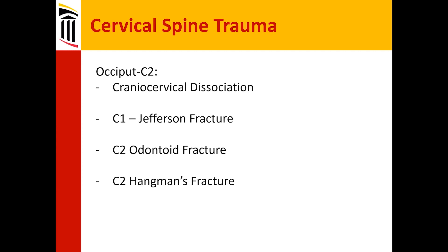C2 odontoid fracture — that little tooth sticks upright and can be fractured off. A type 2, where it fractures just at the dens, is the most common. The Hangman's fracture is an explosive injury involving the ring of C2, resulting from axial loading on the head with forward or backward motion. These are very often not associated with neurologic injury because it's an expansion of the canal, but they are unstable because the head is sort of flopping on its own column versus the rest of the posterior spinal canal.